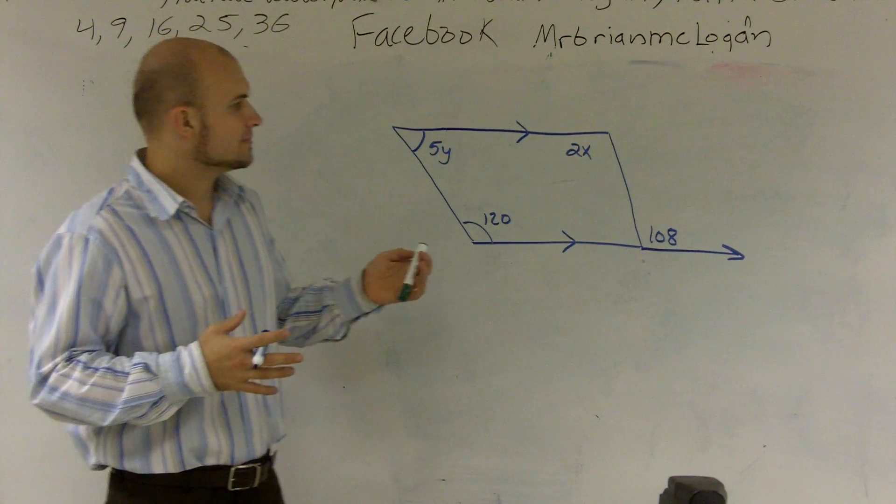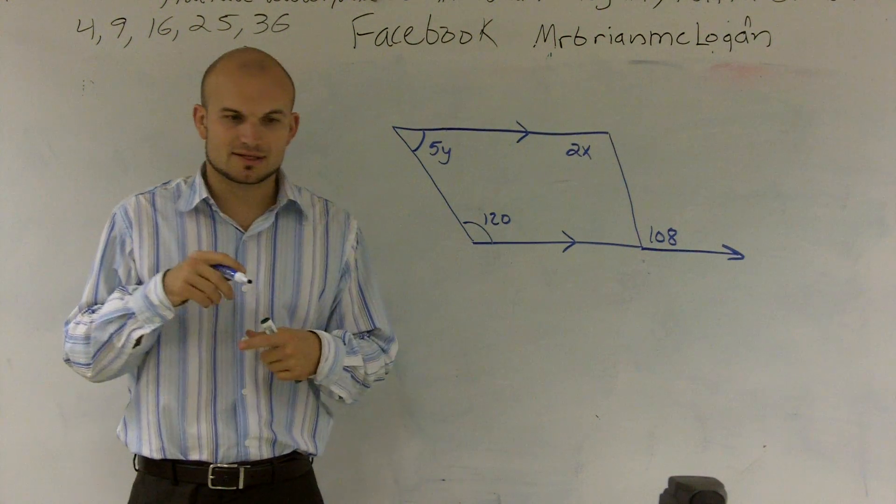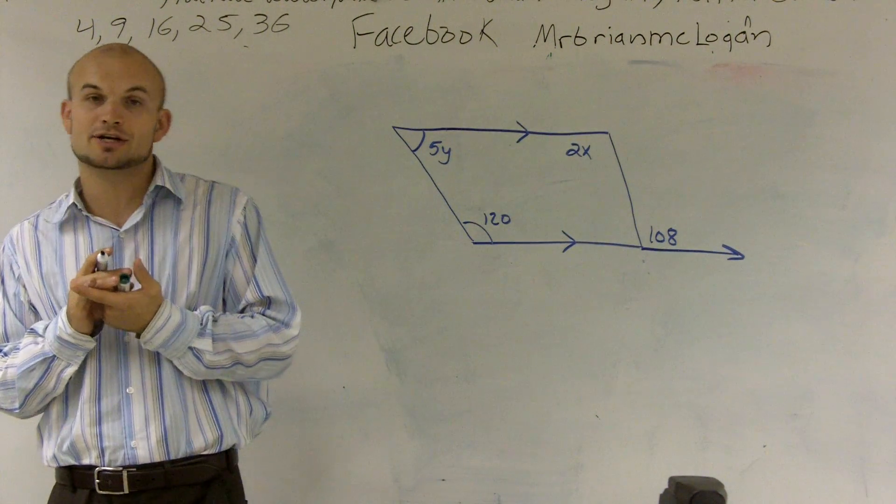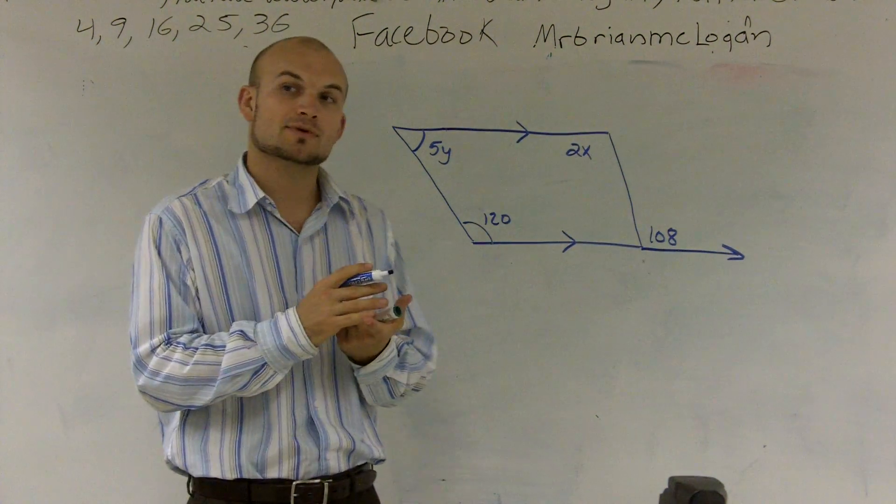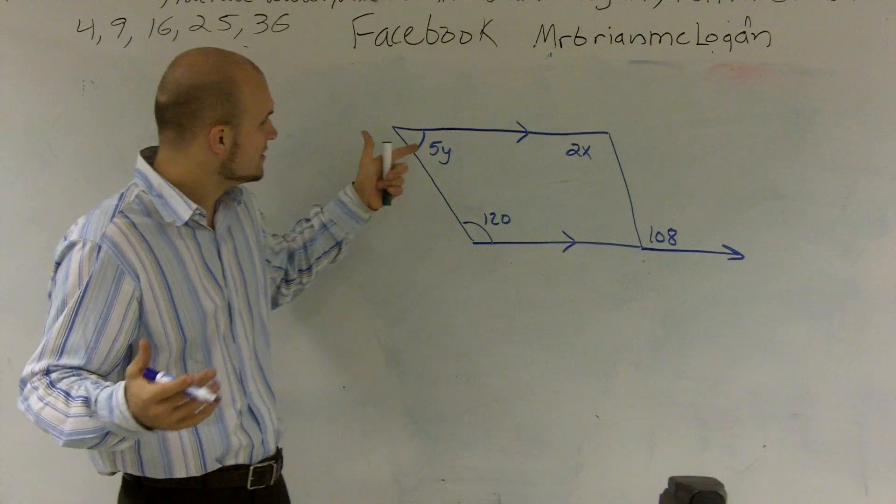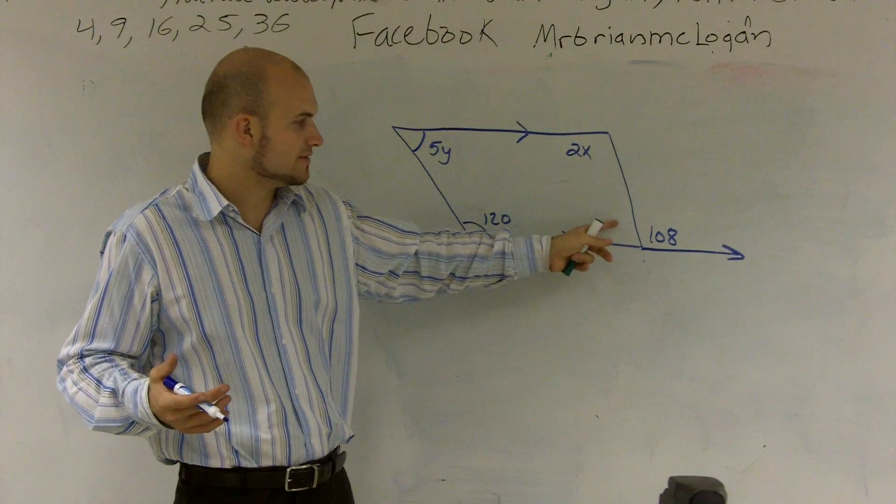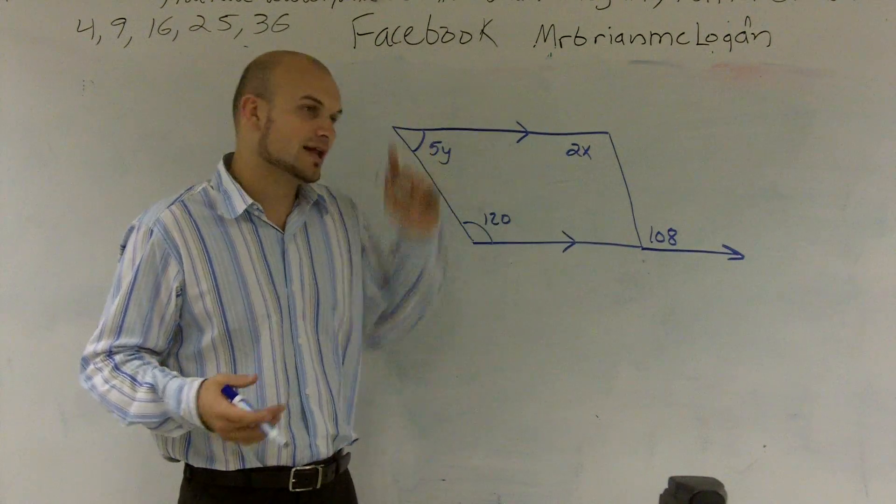So typically what I would do is I know that a quadrilateral, all the interior angles of a quadrilateral add up to 360. So it would be very easy to write an equation. This angle plus this angle plus this angle that we're going to figure out here real soon will all add up to 360.